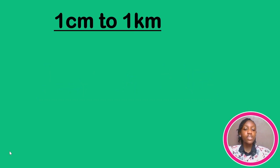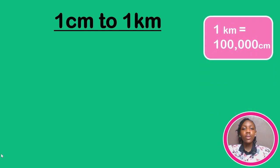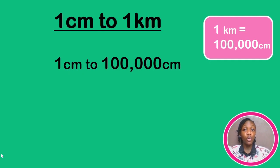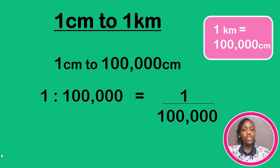One centimeter to one kilometer — let's first convert to representative fraction, then drawing the bar scale won't be too difficult. One important thing to always note: one kilometer equals 100,000 centimeters. So one centimeter to one kilometer becomes one centimeter to 100,000 centimeters. Since they are the same units, the centimeters cancel out, giving us one ratio 100,000 — which can also be written as the fraction one over 100,000. So in representative fraction: 1:100,000.